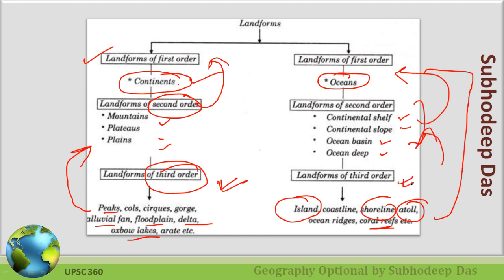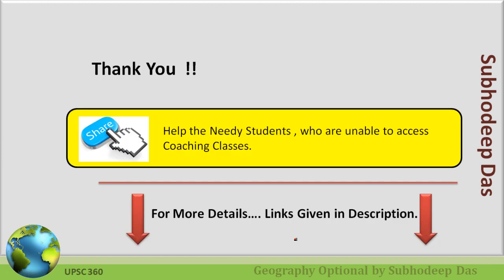One good tip: whenever you are asked about atolls or coral reefs, you can start your answer by stating it is a third-order landform. Every point here is a keyword, and these keywords are what fetch you marks in your paper — remember all these keywords. This will be very helpful in your answer writing practice. Links are given in the description to join the whole class series. This is all about today's class. We'll meet you in the next class. Bye-bye, take care, and thank you very much.